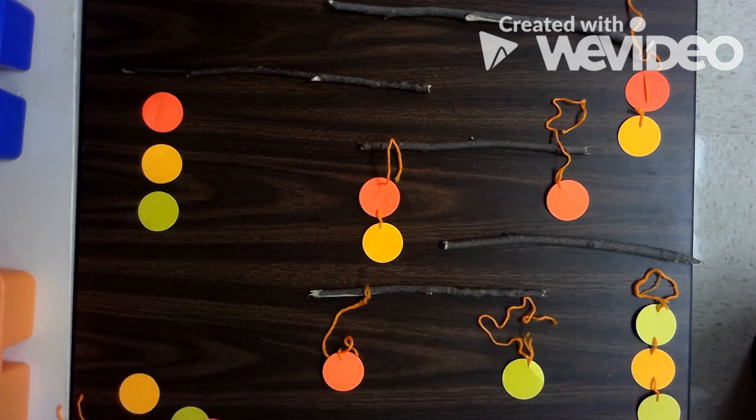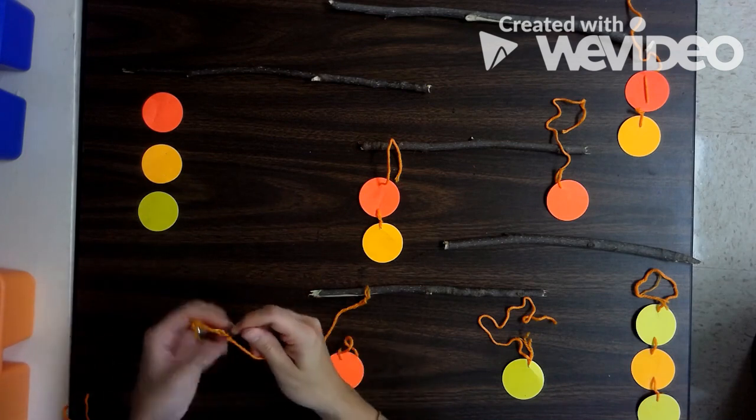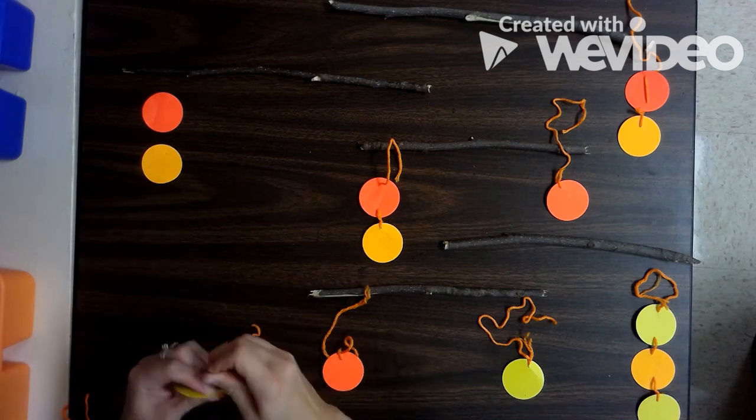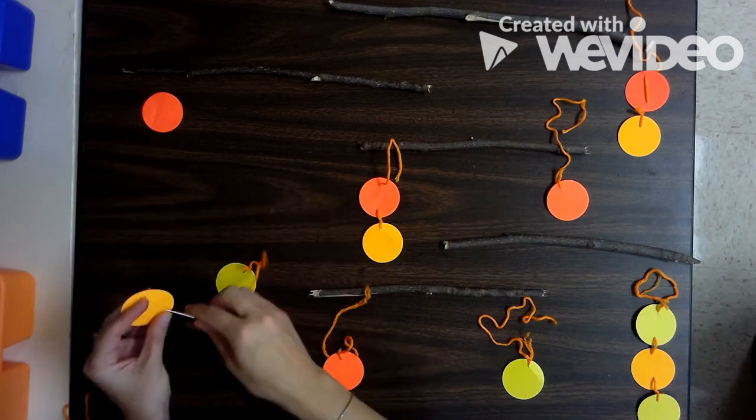And then go ahead and attach those. You can do this a couple different ways. I chose to use yarn. I just threaded it onto a weaving needle I had on hand to make it a little bit easier, but you could poke holes with the scissors and weave it through, or you could even just staple these on if you have a stapler handy.